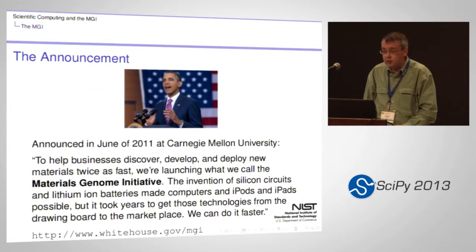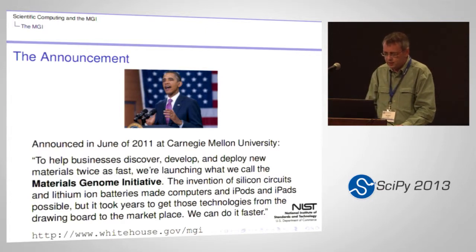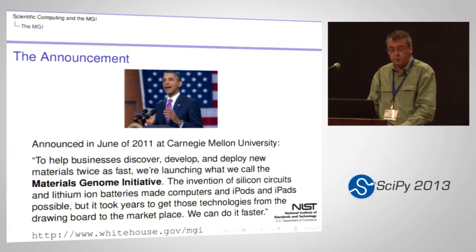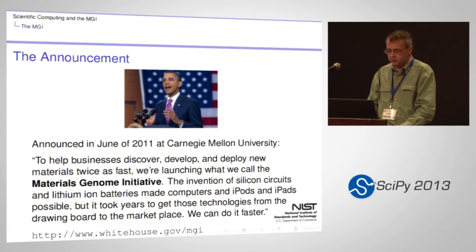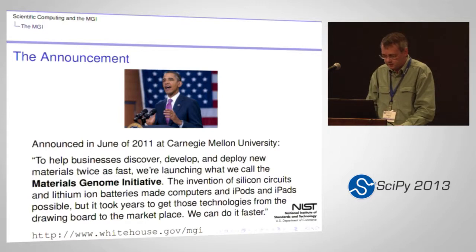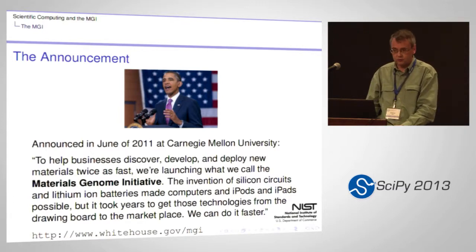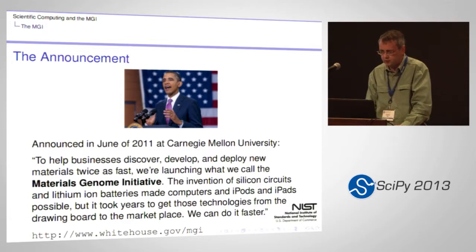So if you follow my management chain far enough up, you get to President Obama, who announced in June of 2011 at Carnegie Mellon University: 'To help businesses discover, develop, and deploy new materials twice as fast, we're launching what we call the Materials Genome Initiative. The invention of silicon circuits and lithium ion batteries made computers and iPods and iPads possible, but it took years to get those technologies from the drawing board to the marketplace. We can do it faster.' Which we think is true. There's a URL there for the White House MGI site for those interested.